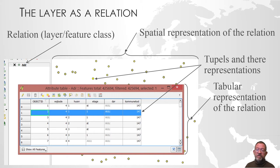So this is the basic representation of relation in QGIS. The non-spatial attributes are displayed in the attribute table. The spatial attributes are represented in the map view.